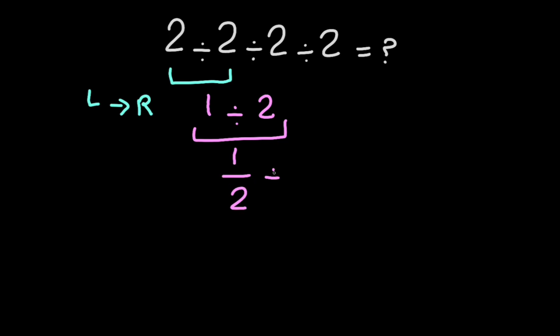And 1 over 2 divided by 2. Now, according to the KCF rule, keep the first fraction, change division to multiplication, and flip the next fraction.